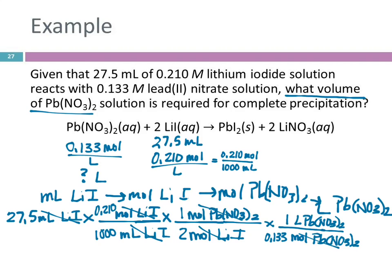So, 27.5 times 0.210 divided by 1,000 times 1 divided by 2 times 1 divided by 0.133 equals. So, this equals 0.0217 liters.